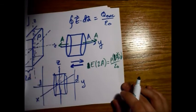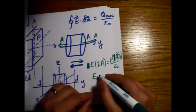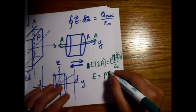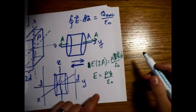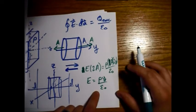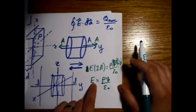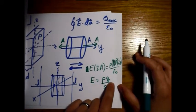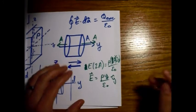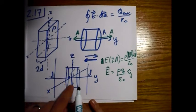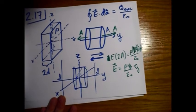Alright, so when we simplify, the A and the 2 cancel out, and we have E equals rho times y divided by epsilon naught. This is for the inside of the slab. The direction works out correctly because when y goes negative, we pick up a minus sign and our electric field points in the negative y-hat direction. So the electric field inside is E = (ρy/ε₀) ŷ. That checks out.